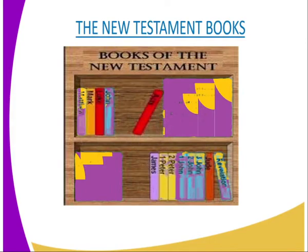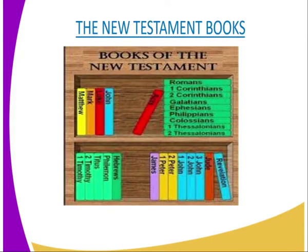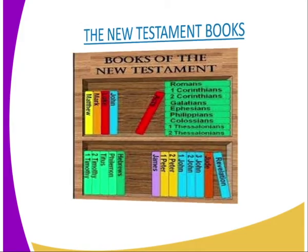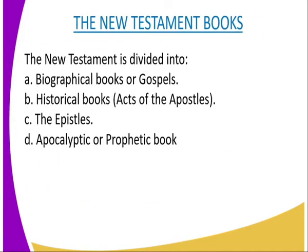In this picture, we have a picture of books in the New Testament. We have different books: John, Luke, Mark, Matthew, Peter, John, and there are different categories. The New Testament is divided into biographical books or the Gospels, historical books, the Epistles, and apocalyptic or prophetic books.